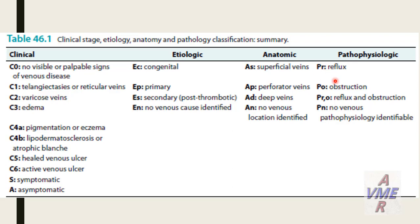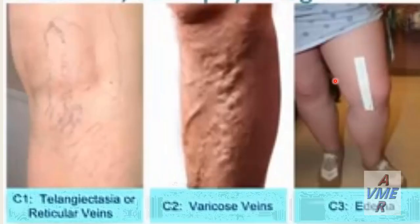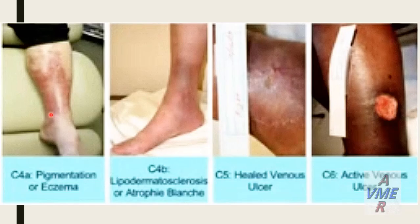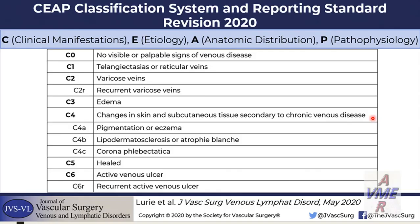For pathophysiology: R for reflux, O for obstruction, RO for reflux and obstruction, and N for non-venous pathophysiology. In the CEAP classification: C1 — telangiectasia or reticular veins; C2 — varicose veins; C3 — edema; C4a — pigmentation or eczema; C4b — lipodermatosclerosis or atrophy blanche; C5 — healed venous ulcer; C6 — active venous ulcer. The new CEAP classification was revised in 2020.